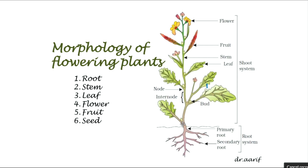Moving up from the roots, this part of the plant is the stem. The stem supports the plant so it can stand up straight, and off of the stem are leaves which contain the chlorophyll and do the photosynthesis. They make energy for the plant so the plant can use the sugars to produce fruit, to grow more leaves, and to do everything it needs to grow.